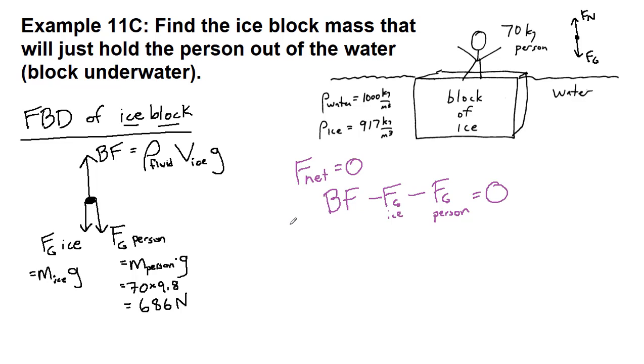Let's plug in what we have. For the buoyant force, the fluid is the water, 1000, the volume of the ice we don't know at the moment, g is 9.8. The force of gravity on the ice is the mass of the ice times 9.8, and the force of gravity on the person we have is 686.